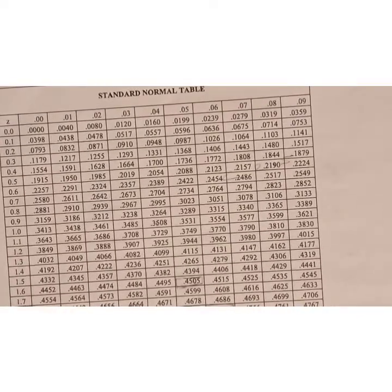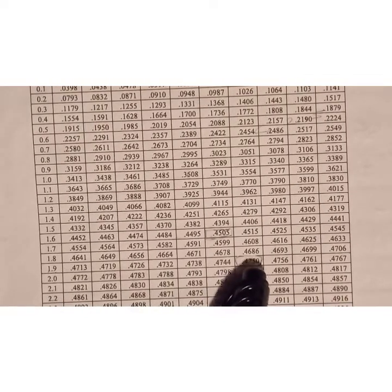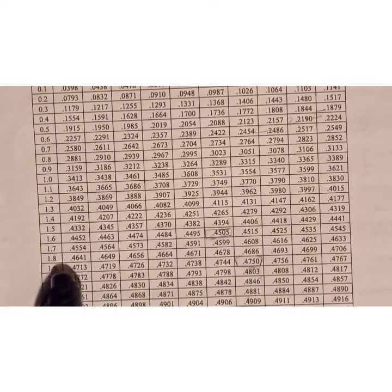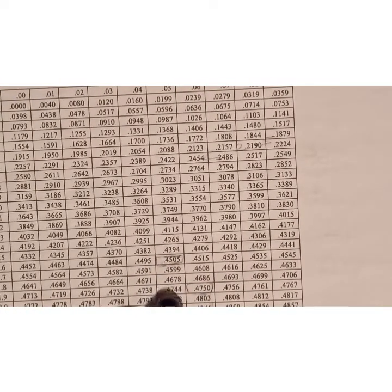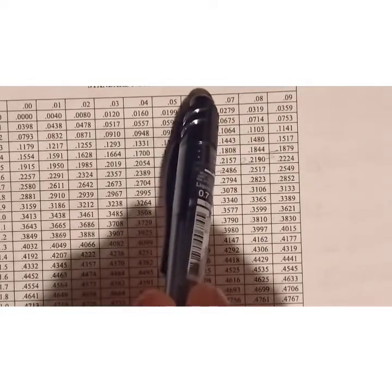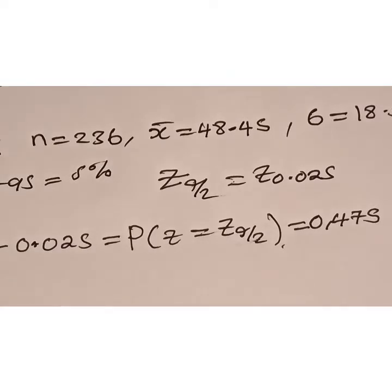This is the table. Let's check for 0.475. If I look carefully, I found my value somewhere here. This value corresponds with 1.9 on my y-axis. Let me check on my x-axis - the value corresponds with 0.06. So my z of 0.025 is 1.96. That's how simple I do it to find the z value.